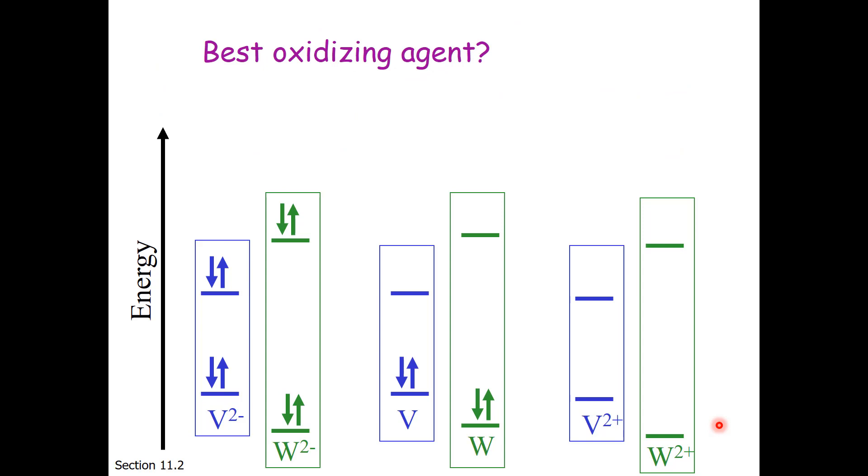What do you want for the best oxidizing agent? I hope you think, well, I would like the lowest energy empty orbital. So looking through my choices here, the lowest energy empty orbital seems to belong to W2 plus. So that is my answer. W2 plus is the best oxidizing agent. What about the best reducing agent? This time, I want the highest energy electrons. So looking through my choices, I think this pair of electrons is the highest energy that I am offered, and those belong to W2 minus. W2 minus is my best reducing agent.